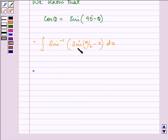Sine inverse will cancel out with sine, so we are left with the integral of pi by 2 minus x with respect to dx.